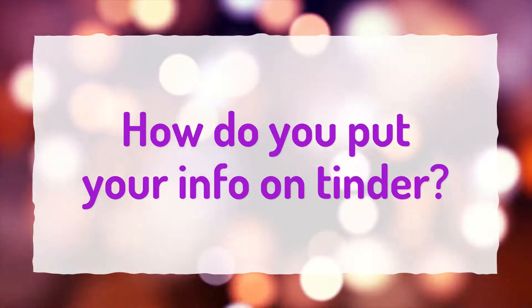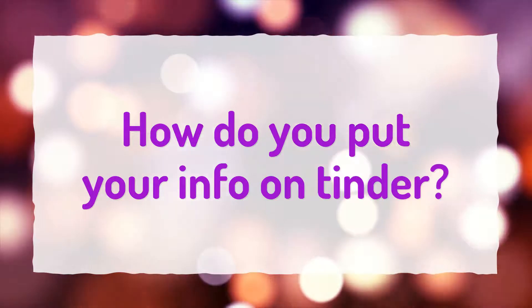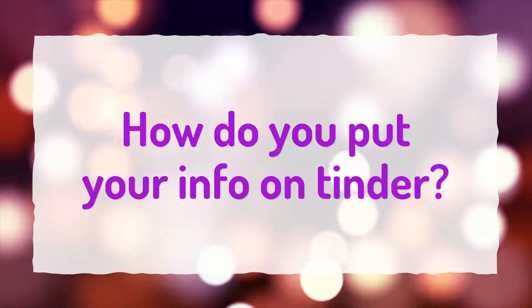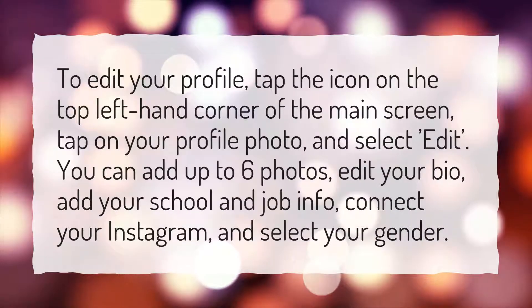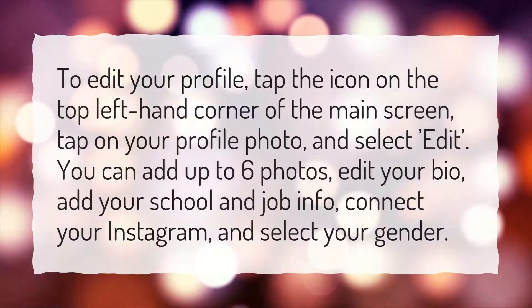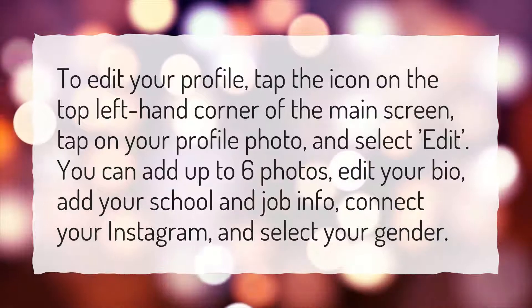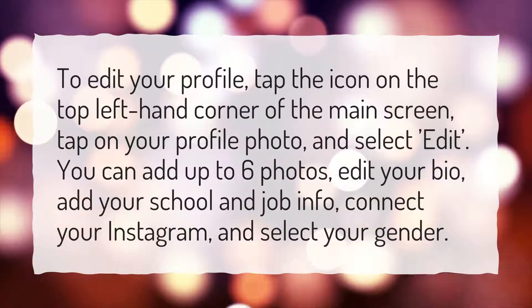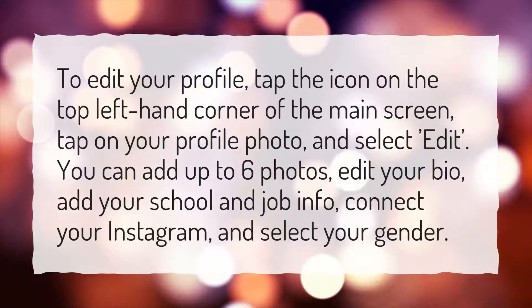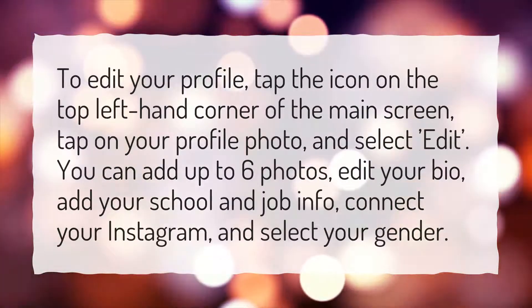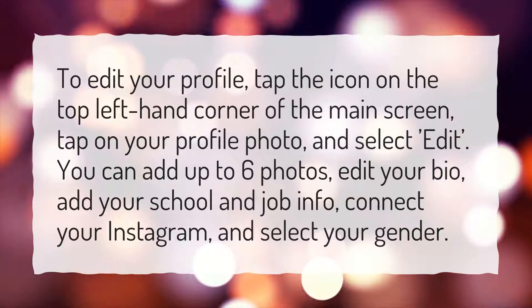How do you put your info on Tinder? To edit your profile, tap the icon on the top left hand corner of the main screen, tap on your profile photo, and select Edit.